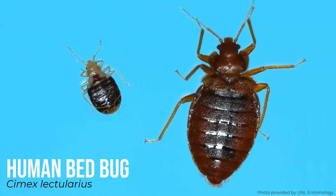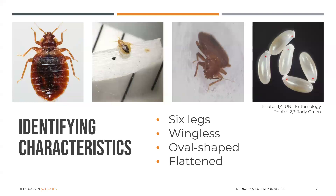This is the human bed bug. Bed bugs are pests of humans, so wherever humans go, they go — that makes things tricky. The scientific name is Cimex lectularius. All insects have six legs, and bed bugs are no different, but they do not have wings at any stage of life. They do not fly and they don't have jumping legs, so they don't jump either. They are typically oval-shaped and flattened from the top down — flattened like a pancake, which is a little different from fleas, which are flattened side to side.